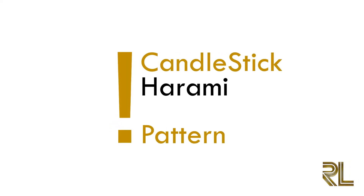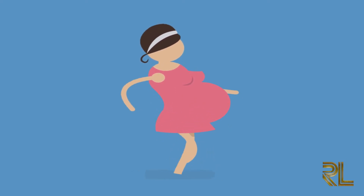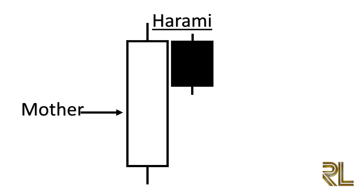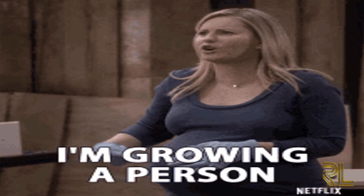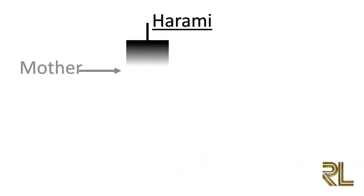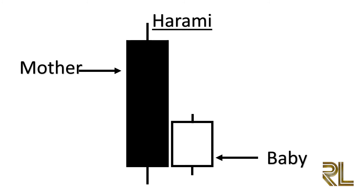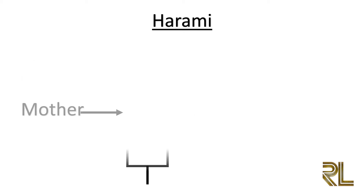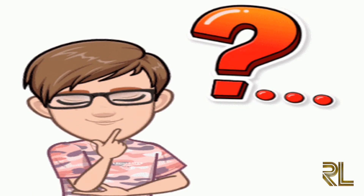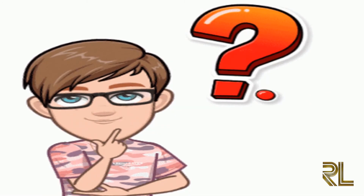The harami pattern — harami means pregnant in Japanese — is considered both a reversal and continuation pattern, consisting of two candlesticks. The first is the large mother candle, followed by a smaller baby candle. The second candle should close outside the previous one. It is a bearish reversal signal at the top of an uptrend, and a bullish signal at the bottom of a downtrend. The smaller body is totally covered by the mother candle. The harami tells us the market is in an indecision or consolidation period. At a trend top or bottom it signals reversal; within a trend it signals continuation.